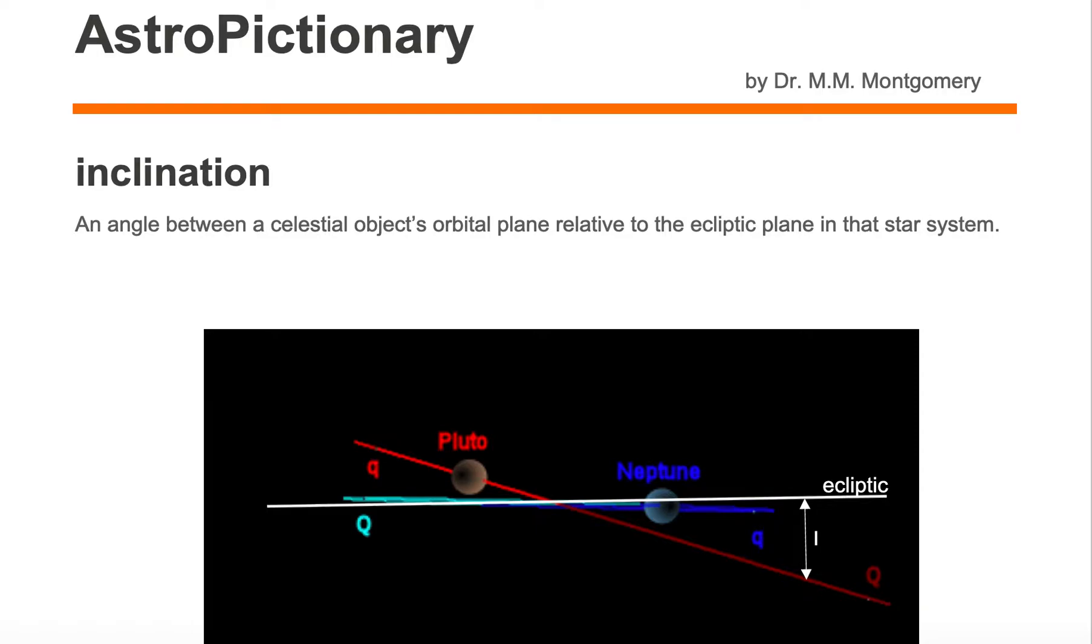Inclination is an angle between a celestial object's orbital plane relative to the ecliptic plane in that star system. For example,